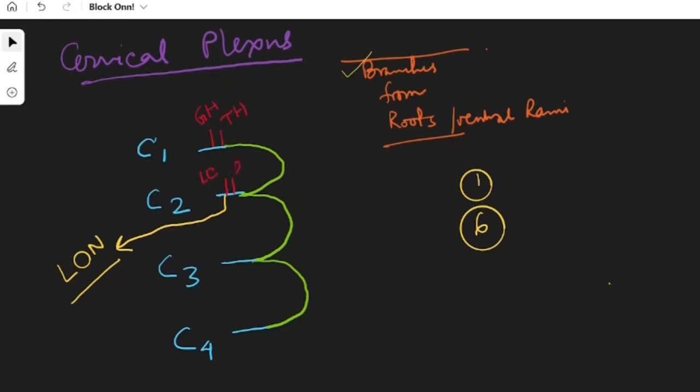From C2 and C3, longus coli and longus capitis. And from C3 and C4, two branches to scalene muscles and the levator scapulae muscle.